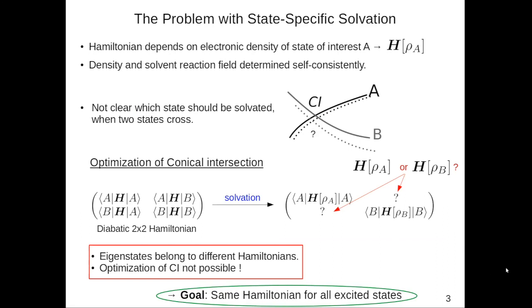For the diagonal elements it is clear: for the A state we choose the density of the A state, for the B state we choose the respective density. But there is no way to select the off-diagonal element — should we choose the density of A or B? If we make any choice, we get different Hamiltonians for different states, so the states are not eigenstates of the same Hamiltonian and are not orthogonal. All transition properties like non-adiabatic couplings and transition dipole moments are not well defined. The goal is to find a Hamiltonian that is the same for all excited states but still includes the full state-specific polarization.